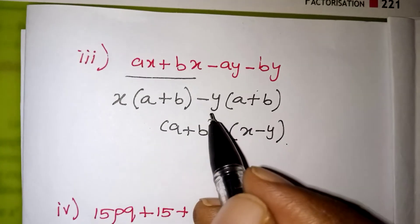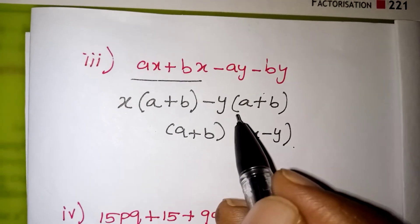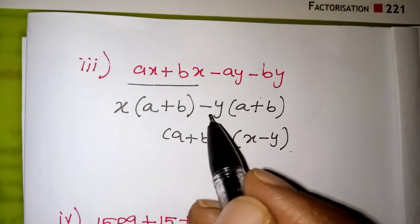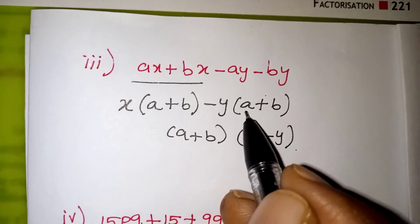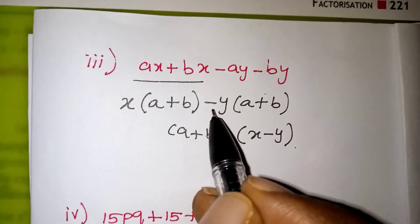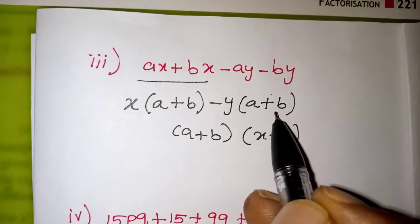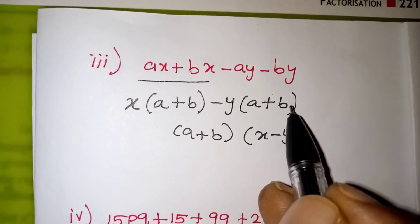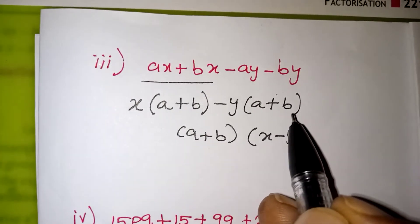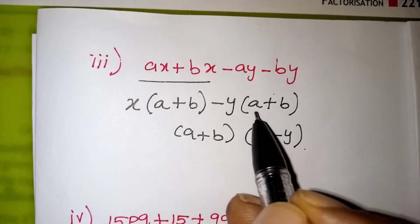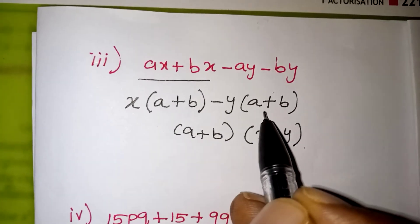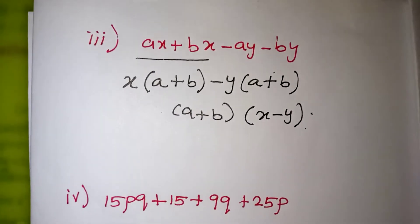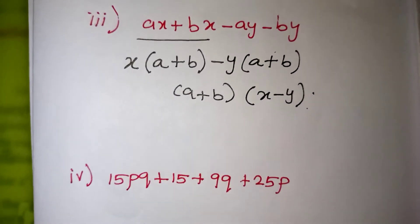Taking (a + b) outside, the remaining from the first group is x and from the second group is −y. So the answer is (a + b)(x − y). If you have any doubt, multiply back inside to verify: −y × a = −ay, −y × b = −by, which is correct.